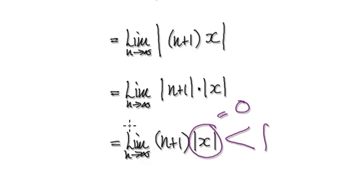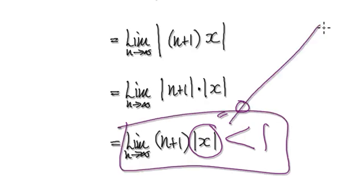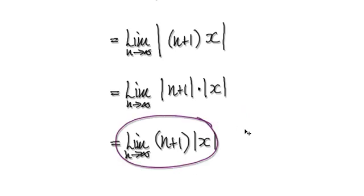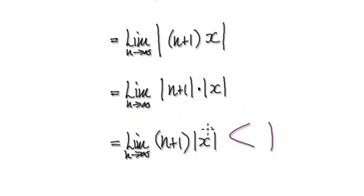Anything else, the whole thing here, the limit will head towards infinity, meaning it will diverge. The only time that this whole thing here will be less than 1 is when this is precisely 0.